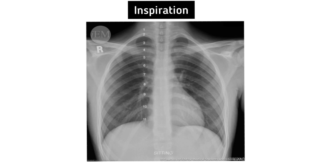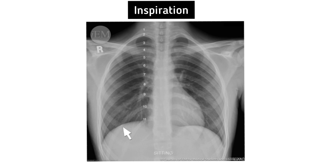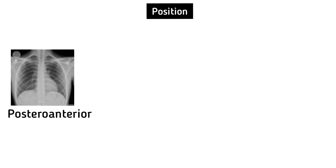Next, inspiration. To assess the degree of inspiration, it is conventional to count the ribs down to the diaphragm. The diaphragm should be intersected by the fifth to seventh anterior ribs in the mid-clavicular line. Fewer ribs visible is a sign of incomplete inspiration.